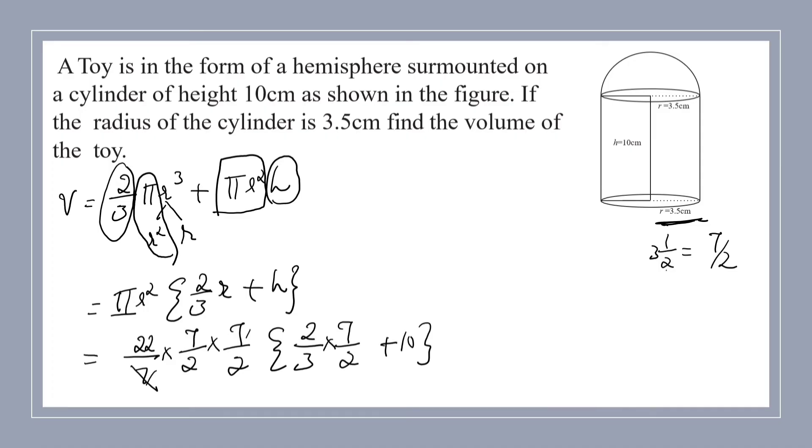Here, you can observe 7 and 7 get cancelled. We are left with 77/2. Here, also we can cancel 2 and 2. So in the next step, here 77/2 into this divided by this. Here, 7/3, 7/3 plus 10.